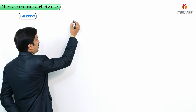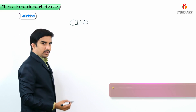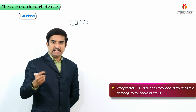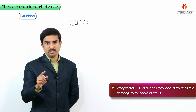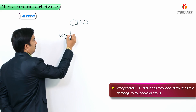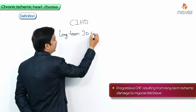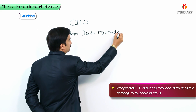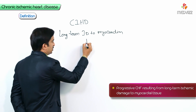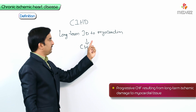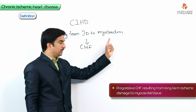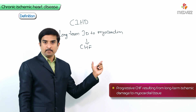Here we have to talk about chronic ischemic heart disease (CIHD), which is part of ischemic heart disease. CIHD is defined as congestive heart failure that develops because of long-term ischemic damage to the myocardial tissue. So what is happening here is there is long-term ischemic damage to the myocardium, which progresses to the development of congestive heart failure.